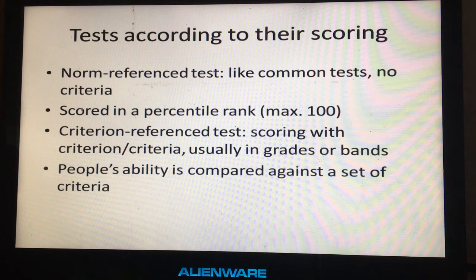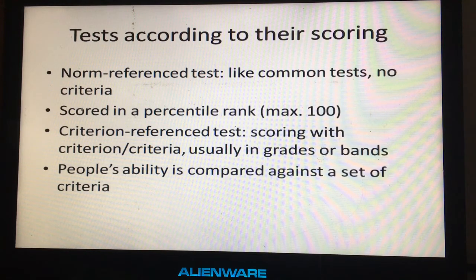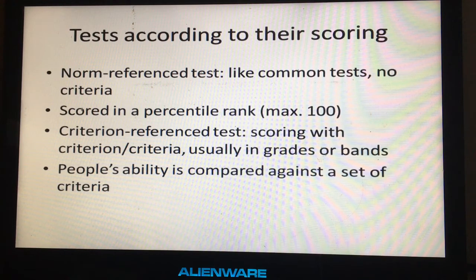According to their scoring, there are two types of tests. The first is the norm reference test — it is like a common test, such as multiple choice, short answer, or true-false statement tests, which don't require specific scoring criteria. You simply calculate based on the norm, where 100 is the highest score. For example, if we do a 100-item multiple choice test and make 10 mistakes, our score is simply converted into a percentile rank and we get 90.